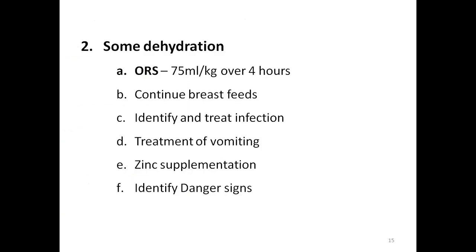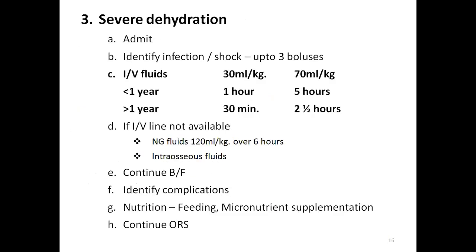For some dehydration, treat with ORS at 75 ml/kg over four hours. For severe dehydration, IV fluids are required. If the child presents with shock, give boluses. In children less than one year: 30 ml/kg in the first hour, then 70 ml/kg over the next five hours. In children more than one year: 30 ml/kg in 30 minutes, then over two and a half hours. If no IV line, use nasogastric or intraosseous route. Continue nutrition and ORS if the child can take it.